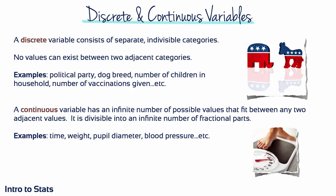Researchers use both discrete and continuous numerical observations to quantify variables. Discrete observations can only take on whole numbers — not values in between, so no fractions or decimals. For example, in terms of British politics, you can be a member of the Liberal Democrats or the Conservative Party, but you can't be three-fifteenths of one and twelve-fifteenths of another. Similarly, individuals have whole numbers of vaccinations, not 3.43 vaccinations of tetanus or 0.74 vaccinations of hepatitis B.